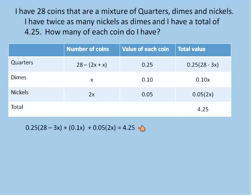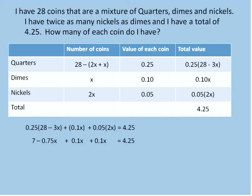Now I'm going to simplify this by getting rid of parentheses, multiplying these together. For quarters, the most complicated, I'm going to use the distributive property. I'm going to multiply 0.25 times each term inside the parentheses: 0.25 times 28 and 0.25 times negative 3x. This becomes 7 minus 0.75x plus 0.1x plus 0.1x equals 4.25. On the left side, I have the value of 7 that I got by multiplying 0.25 times 28.